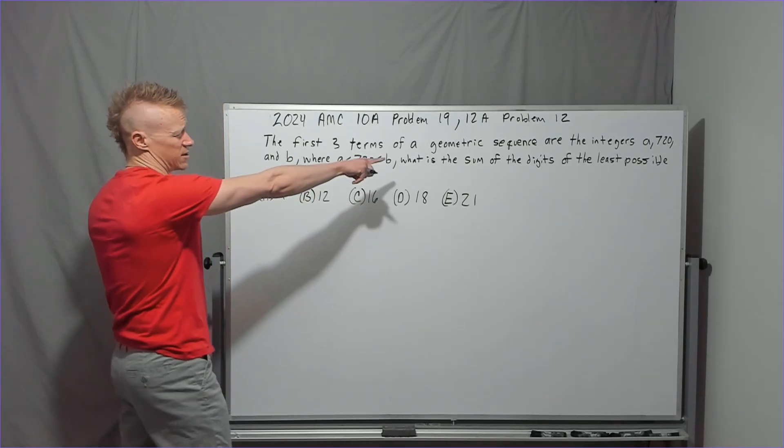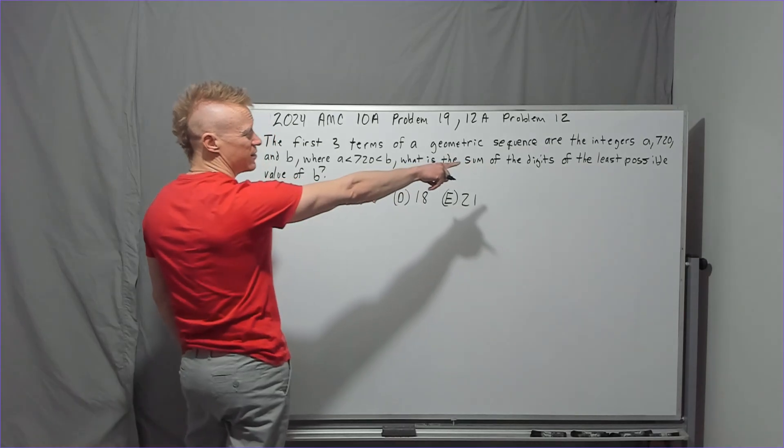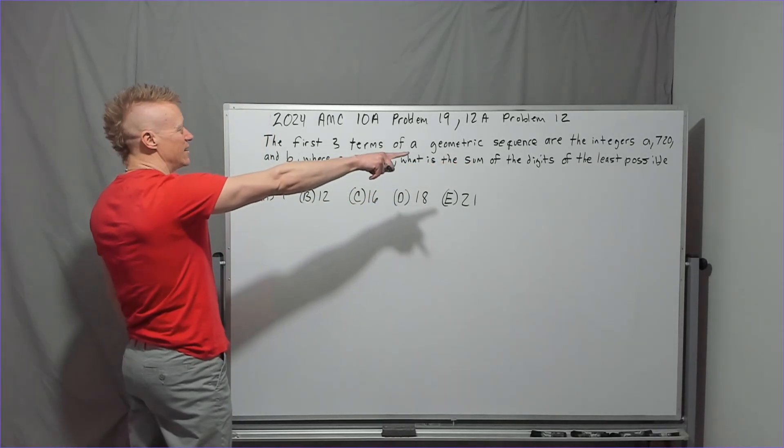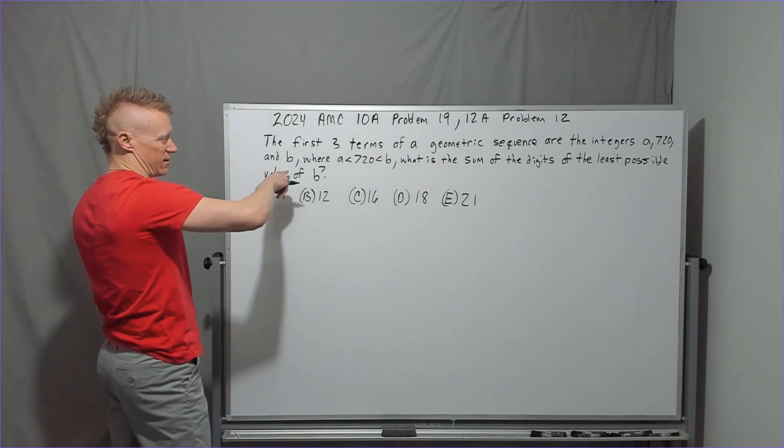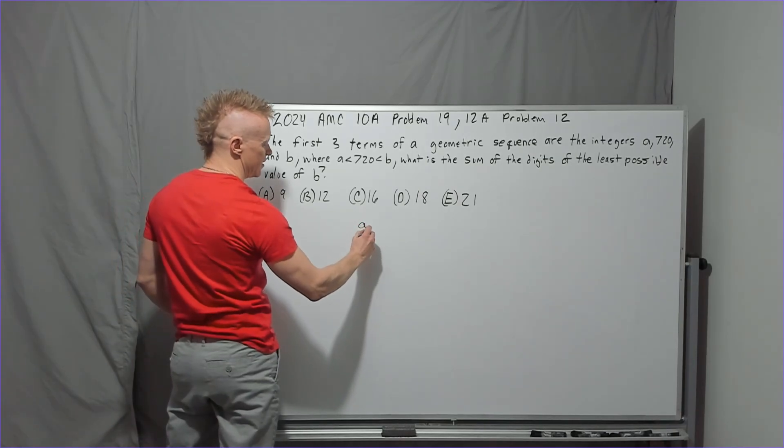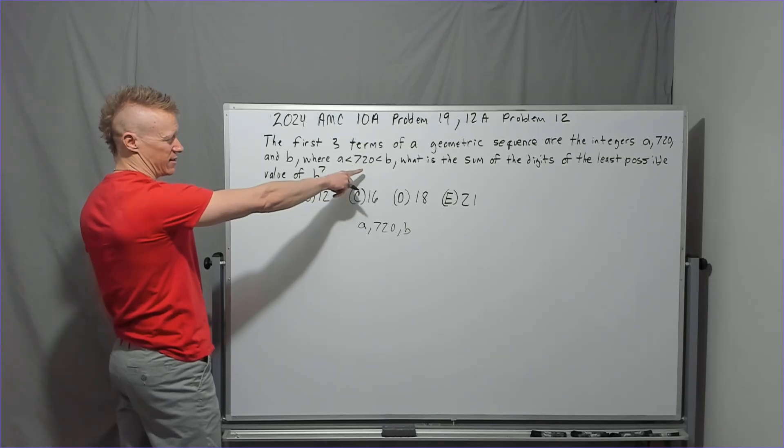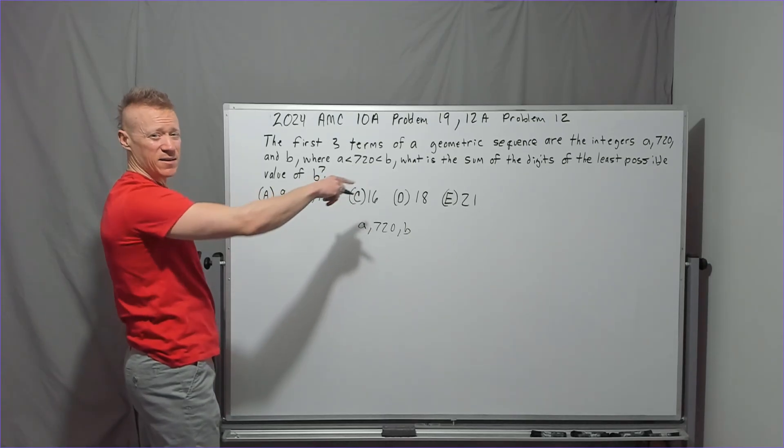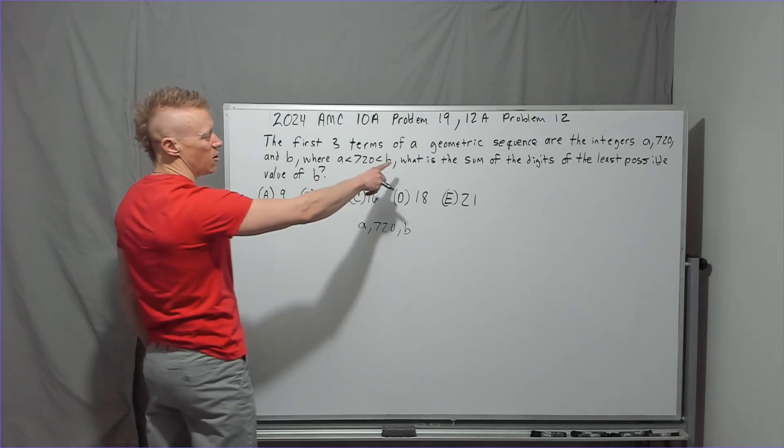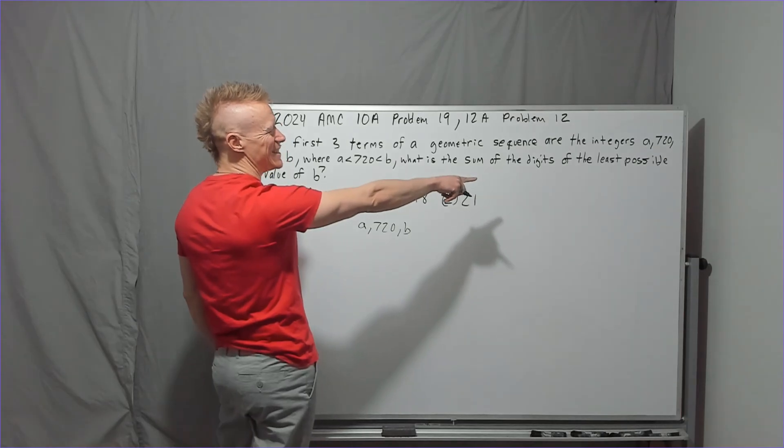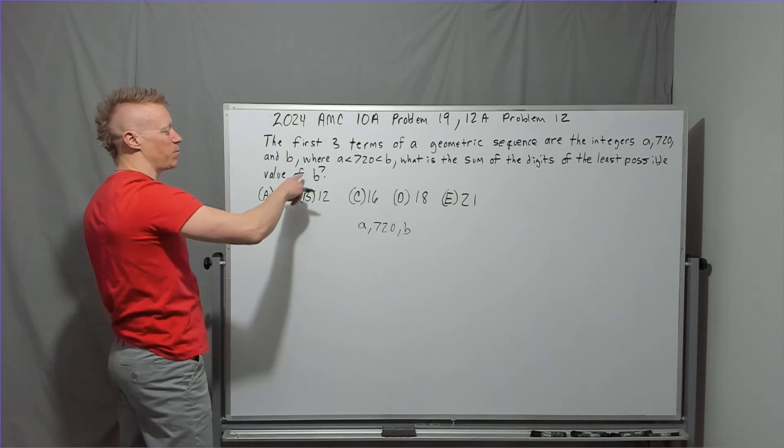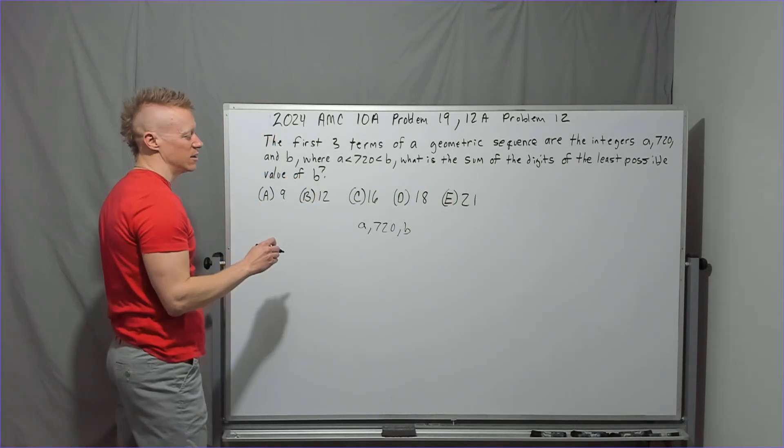The first three terms of a geometric sequence are the integers A, 720, and B. So A, 720, B, where A is less than 720 and 720 is less than B. What is the sum of the digits of the least possible value of B?